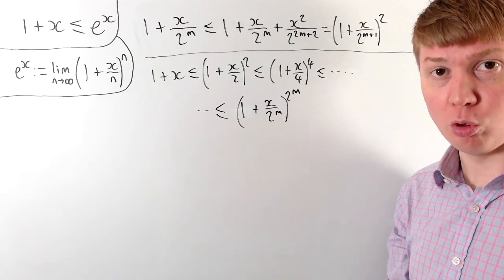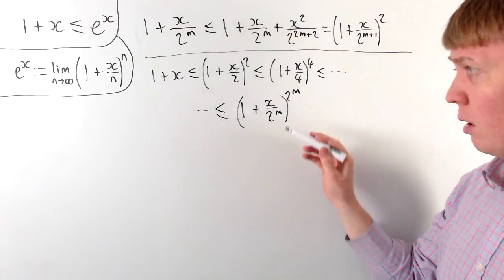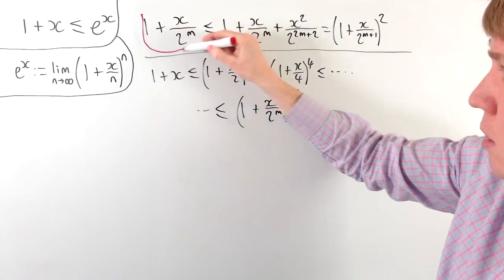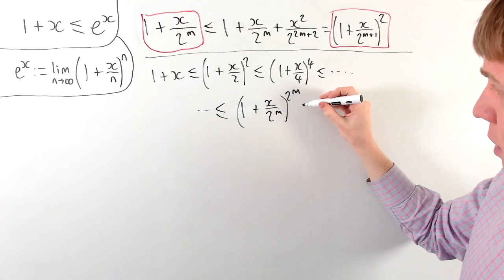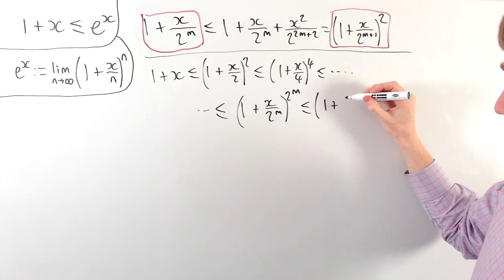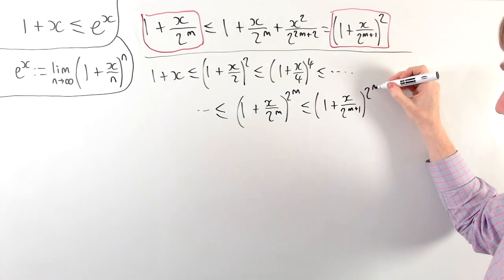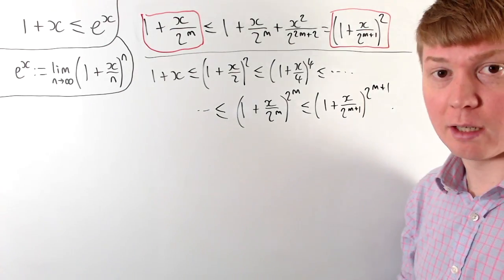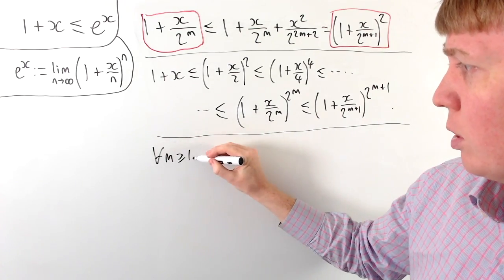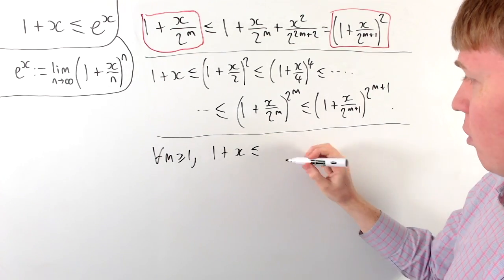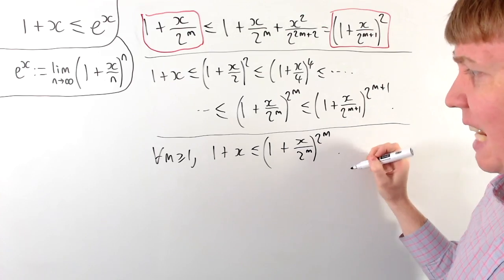To be a bit more formal and rigorous, we could turn this into a proof by induction, with this as our inductive step. We've seen that 1 plus x over 2 to the m is less than or equal to 1 plus x over 2 to the m plus 1, all squared. When we take this squared inside, the 2 to the m multiplied by 2 gives us 2 to the m plus 1 as the power outside the bracket. So for all positive integers m, we know that 1 plus x is less than or equal to 1 plus x over 2 to the m all raised to the power of 2 to the m.